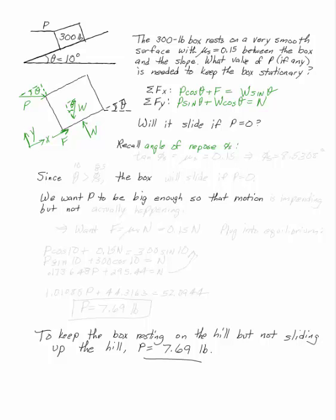Phi s is that nice angle where tan phi s is equal to mu s. This is the coefficient of static friction. We can solve that to find out that the angle of repose for this slope is 8.5038 degrees. Now, since theta, my 10 degree angle, is greater than my angle of repose at 8.5, the box will slide if p is equal to zero.